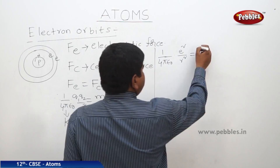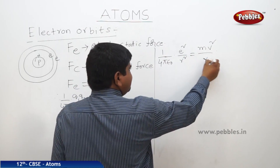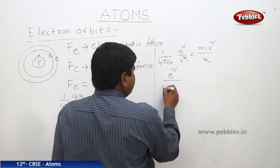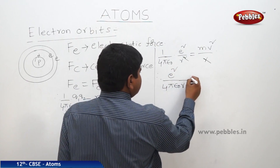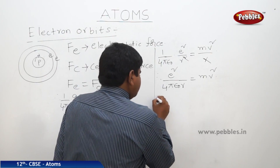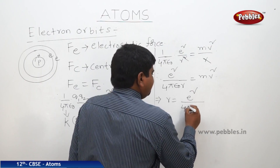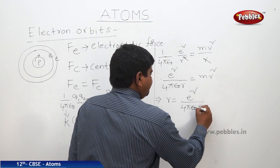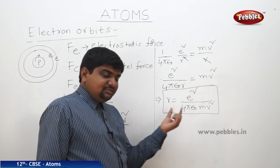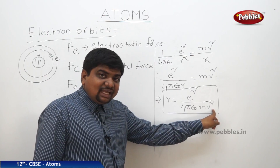This is balanced by Mv-squared over R. What are the things we can cancel here? R and R-squared get cancelled. Therefore, E-squared over 4 pi epsilon-0 R is equal to Mv-squared. From this equation, R is equal to E-squared over 4 pi epsilon-0 into Mv-squared. This equation is very important — it gives the relation between the radius of the orbit and the velocity of the electron.